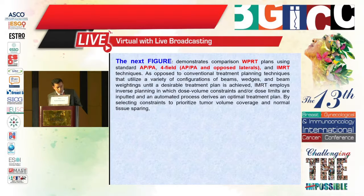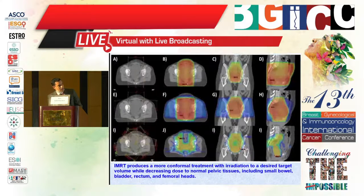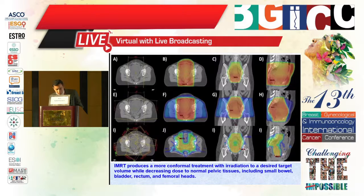In the next figure, we have three planning techniques for this case. We can note that IMRT produces a more conformal treatment with radiation to the desired target volume while decreasing dose to the normal pelvic tissues, including small bowel, bladder, rectum, and the femoral heads.